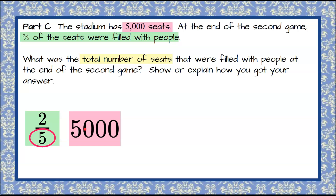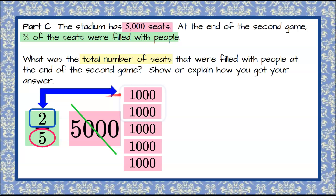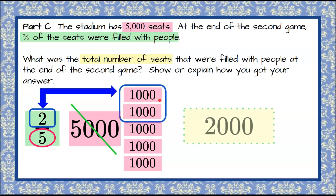Because a fraction is a part of a whole, we're going to take 5,000 and divide it into five equal parts. Five thousand divided five ways is 1,000 each — so five parts of 1,000. Now we want two of those five parts, which is 2,000. So two-fifths of 5,000 is 2,000, telling us that the total number of seats filled with people at the end of the second game was 2,000 seats.